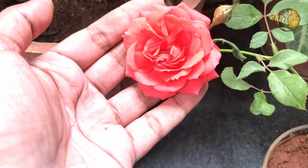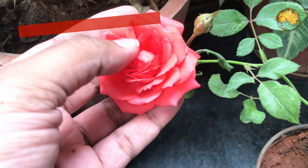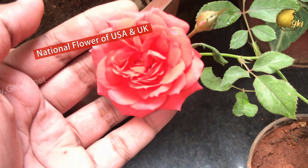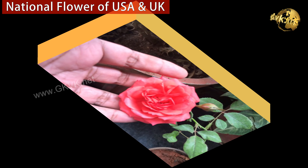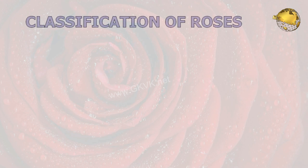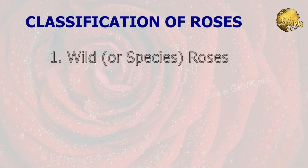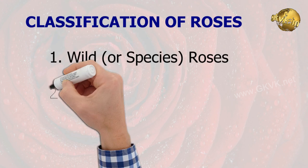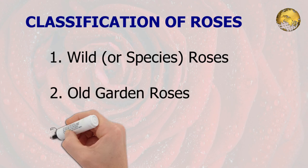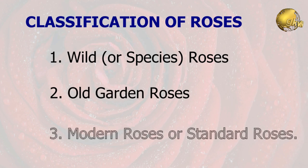Rose is the most popular and most beautiful flower worldwide. In fact, Rose is the national flower of USA and UK. There is no single definitive system of categorizing roses, but commonly they are divided into three main categories: Wild or Species Roses, Old Garden Roses, and Modern Roses or Standard Roses.